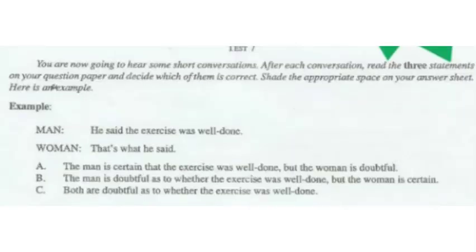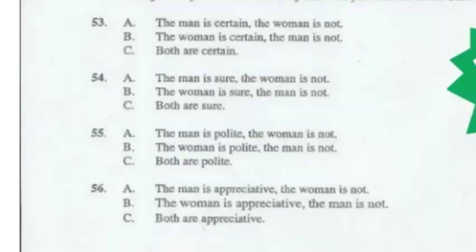Test 7. You are now going to hear some short conversations. After each conversation, read the three statements on your question paper and decide which of them is correct. Shade the appropriate space on your answer sheet. Here is an example. He said the exercise was well done. That's what he said. Both are doubtful as to whether the exercise was well done. The correct answer is therefore statement C. This is recorded by shading answer space C. Now get ready to answer the rest of test 7 on your answer sheet. Start at number 53.